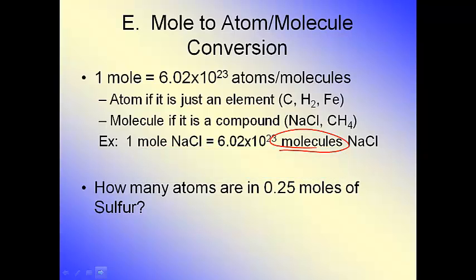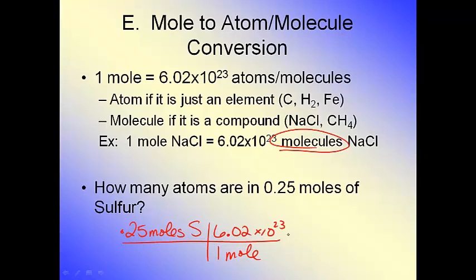So let's do a little conversion. You'll notice that this starts the same. Again, any mathematical problem, the first thing you do is write down what you're given: 0.25 moles of sulfur. Now, sulfur is an element. I'm going to look at the periodic table. So I know that one mole of sulfur is equal to 6.02 times 10 to the 23rd atoms of sulfur.